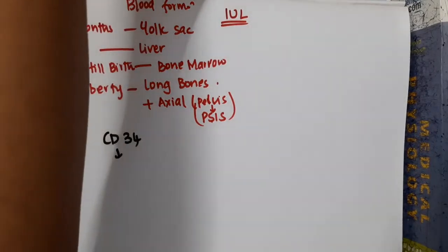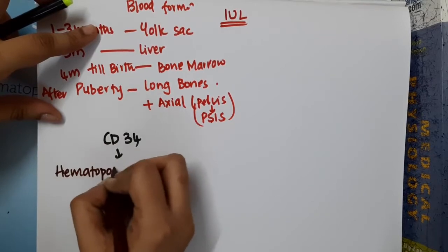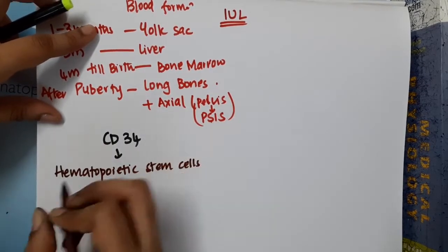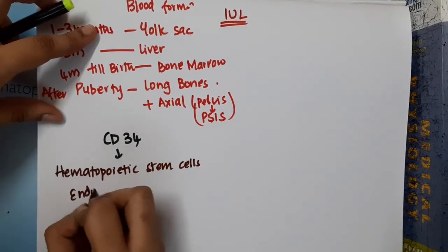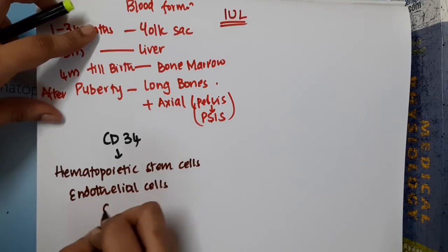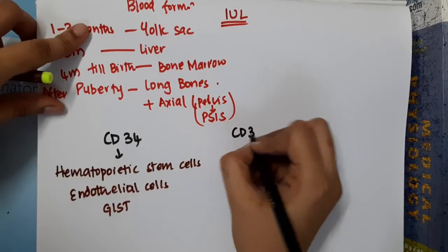CD34 marker can be found in hematopoietic stem cells, endothelial cells, and gastrointestinal stromal tumors.